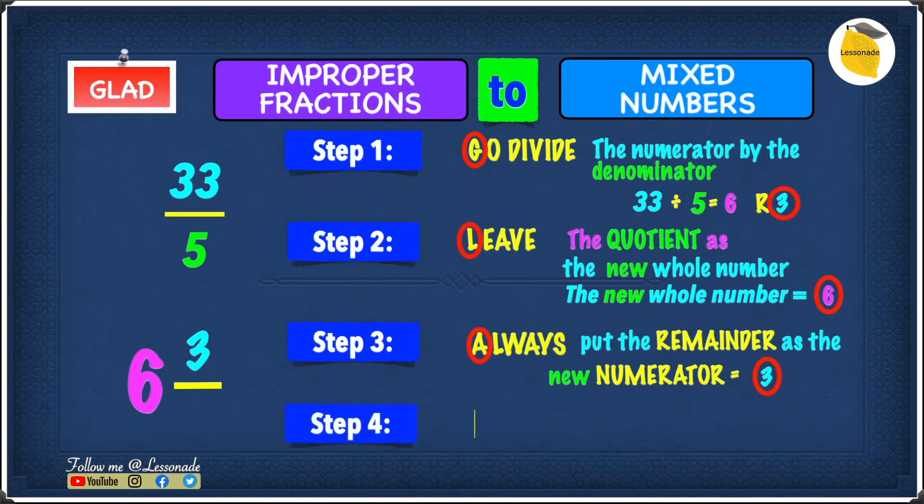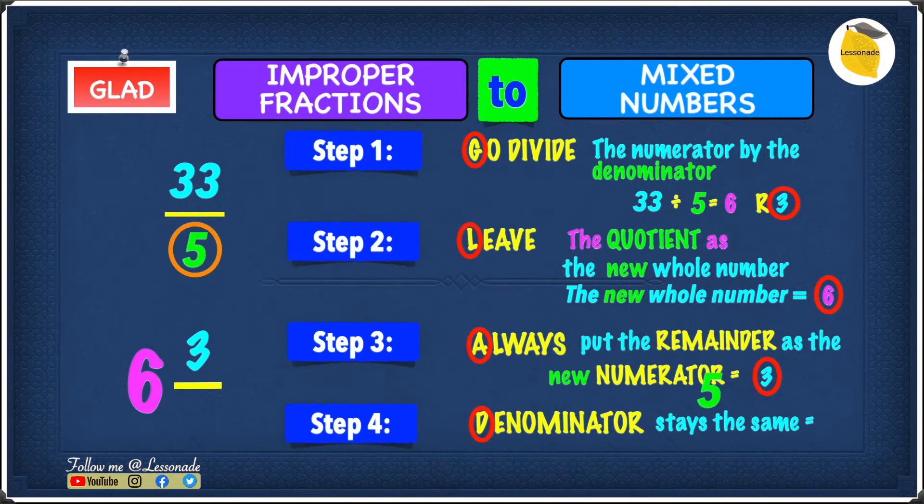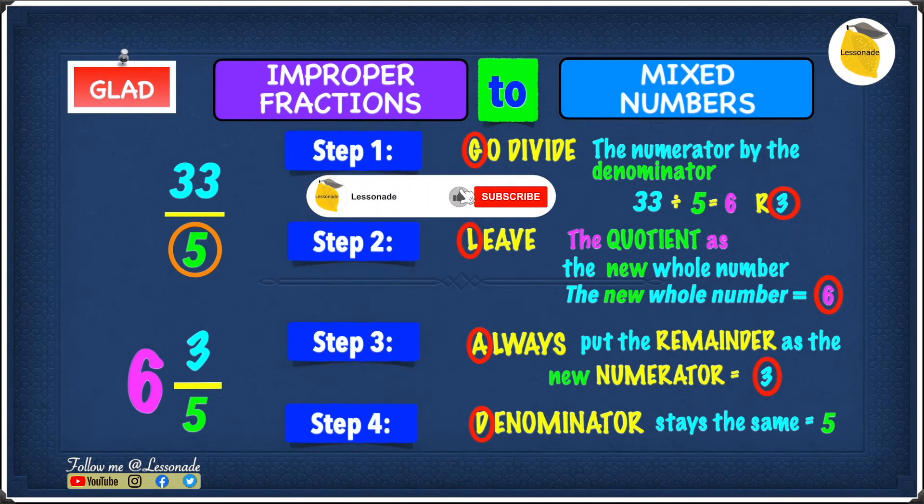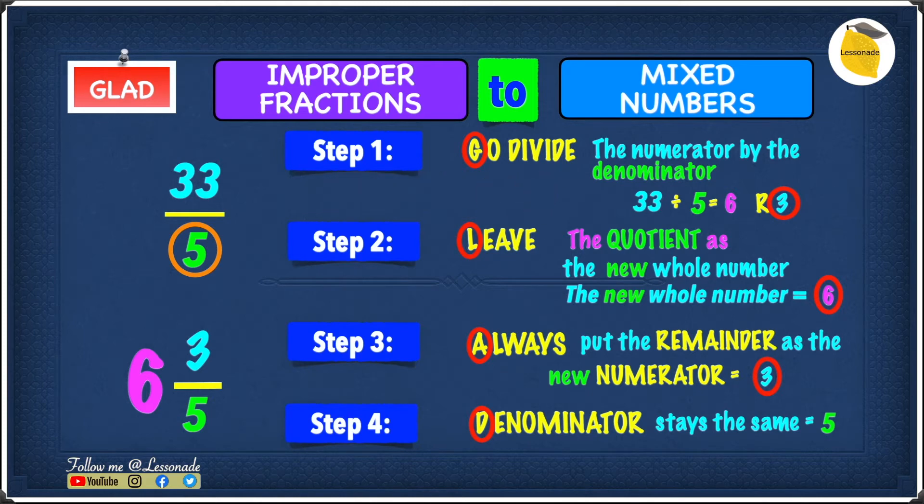And final step, step 4 is D. D is denominator and denominator stays the same. So in 33 over 5, 5 is the denominator. So when converting this into a mixed number, the denominator will also be 5. So converting 33 over 5 into a mixed number gives you 6 and 3 over 5.